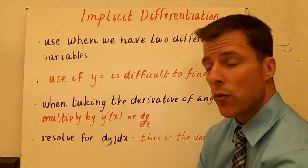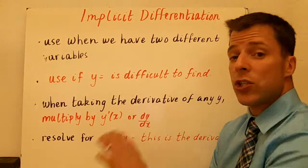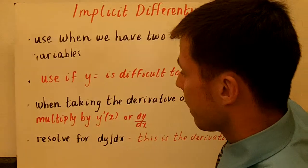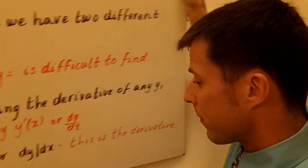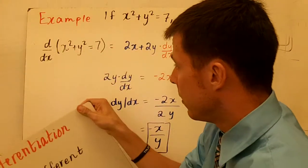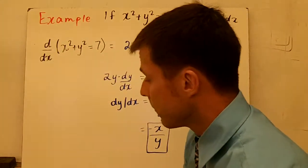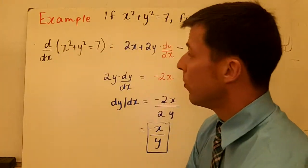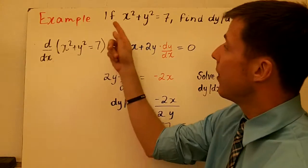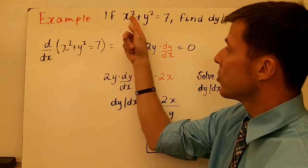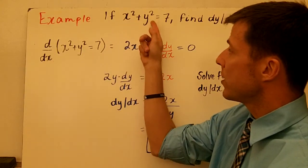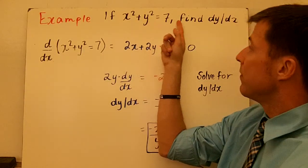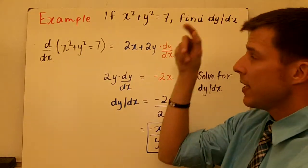Resolve the equation then. So let's look at some examples. In example one, we have x squared plus y squared equals 7 — find dy/dx.